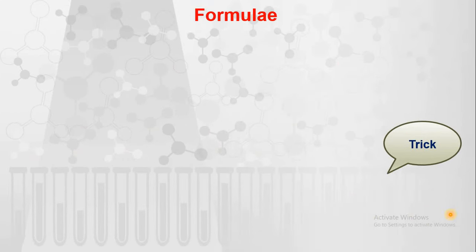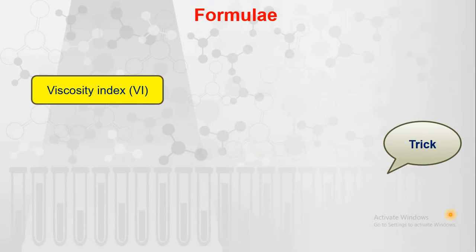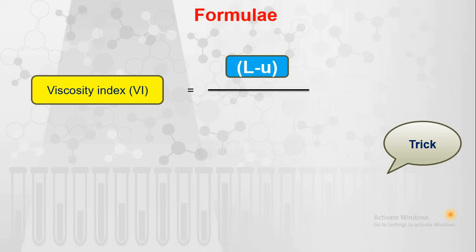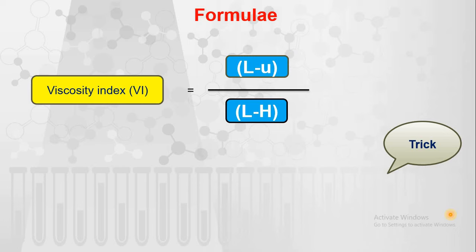The formula is: Viscosity Index, that is VI, is equal to L minus U divided by L minus H, multiplied by 100. So what is L, U, and H?